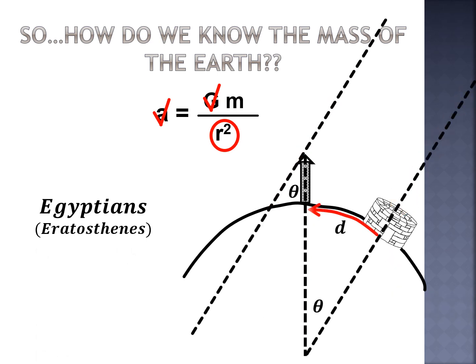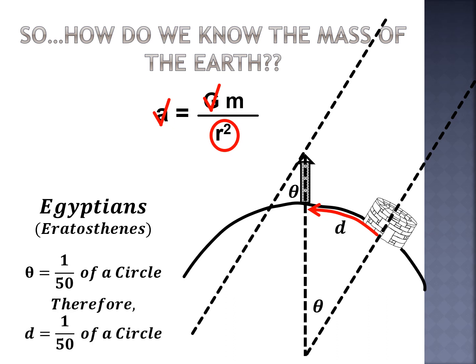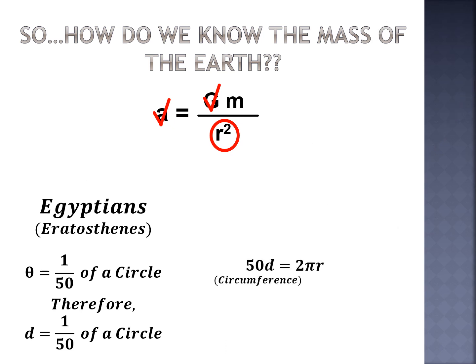Using those shadows and angles, Eratosthenes determined the radius of the Earth. Knowing that sunlight is essentially parallel when it arrives, he measured the shadow angle in Alexandria and recognized it as an alternate interior angle to the central angle at Earth's center. He determined that angle was 1/50th of a full circle, meaning the arc length between the two cities was also 1/50th of Earth's circumference. Multiplying that arc length by 50 gave the circumference, and using C = 2πr he calculated Earth's radius.